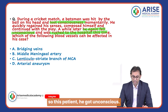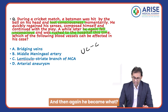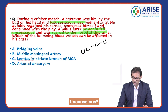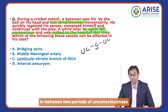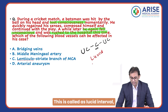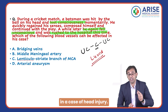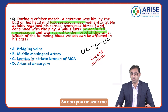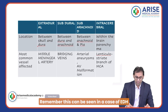This patient got unconscious, then regained consciousness, and then again became unconscious. A period of consciousness between two periods of unconsciousness is called a lucid interval. This lucid interval can be seen in a case of head injury — specifically, can you answer in which condition it is seen?